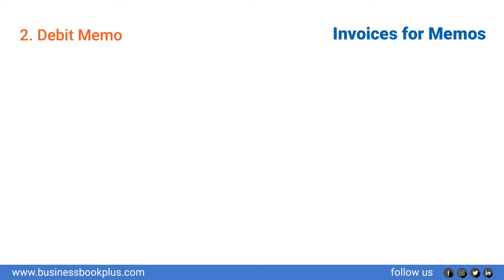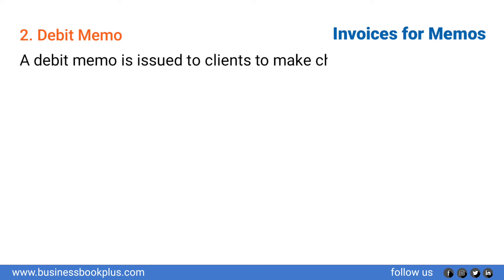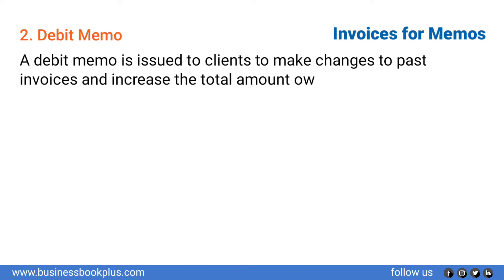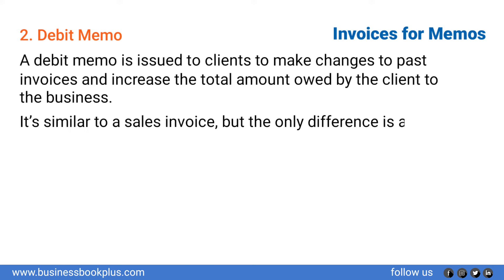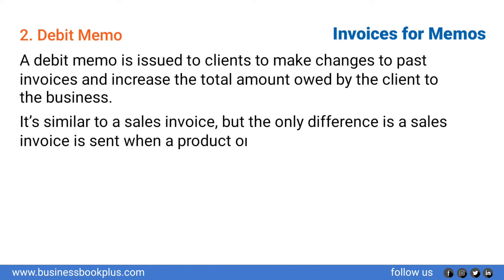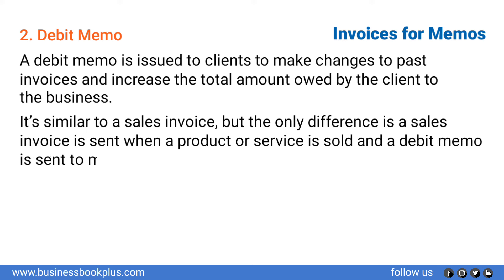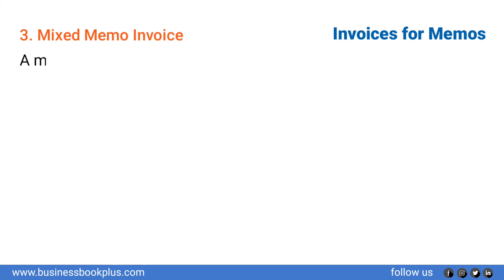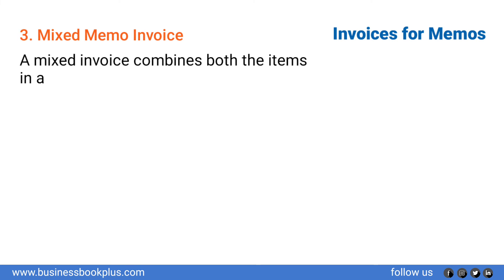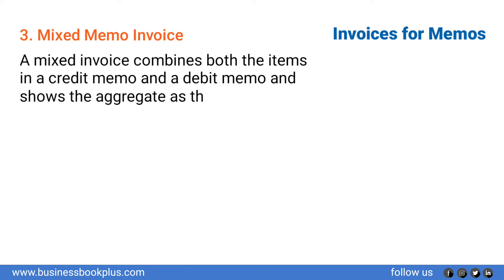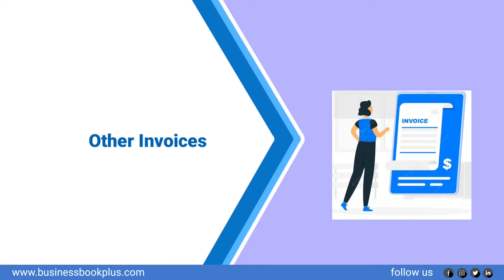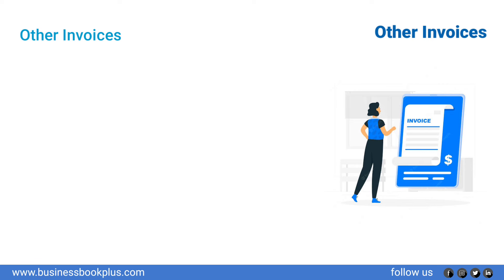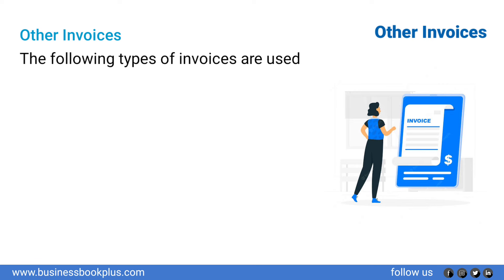Debit memo: a debit memo is issued to clients to make changes to past invoices and increase the total amount owed by the client to the business. It is similar to a sales invoice, but the difference is that a sales invoice is sent when a product or service is sold, while a debit memo is sent to make adjustments to invoice totals of previously sold products or services. Mixed memo invoice: a mixed invoice combines both the items in a credit memo and a debit memo and shows the aggregate as the total.